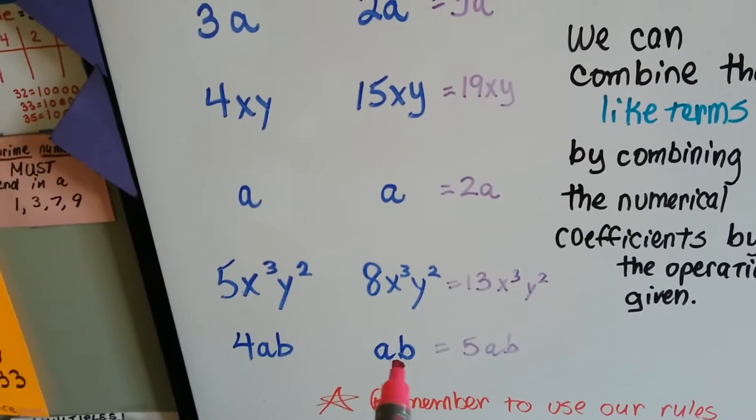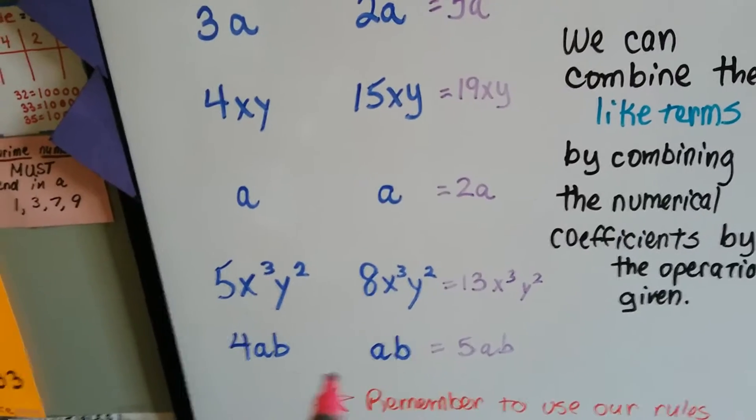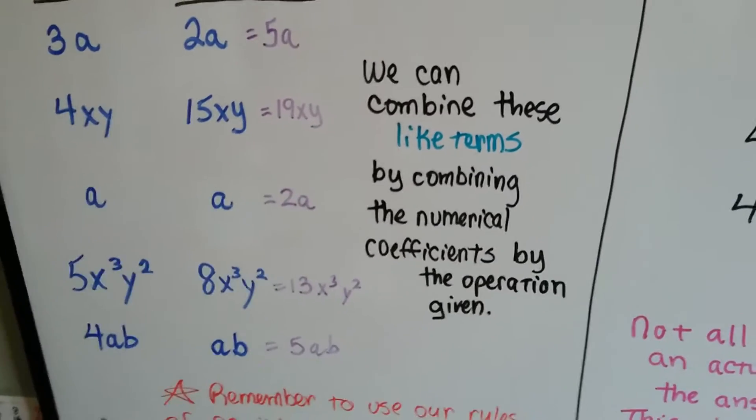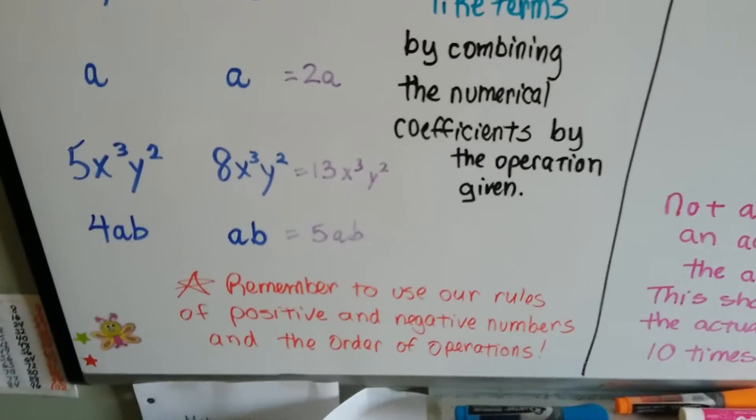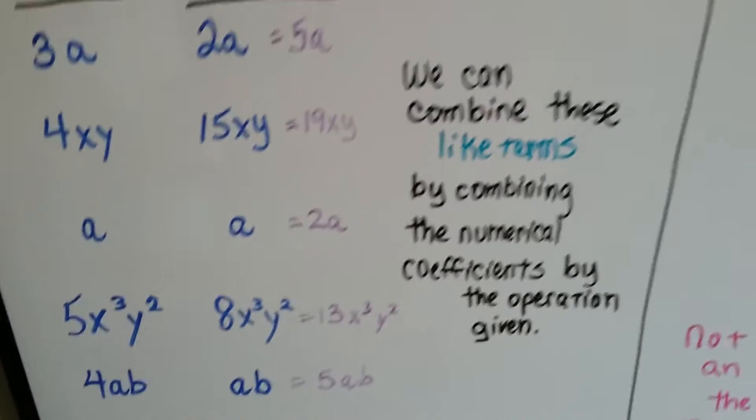4ab is a like term with ab. Because there's an invisible one in front of here, if we added them together, we'd have 5ab. So we can combine these like terms by combining the numerical coefficients by the operation given. We just need to remember our rules of positive and negative numbers and the order of operations so that we do it correctly.